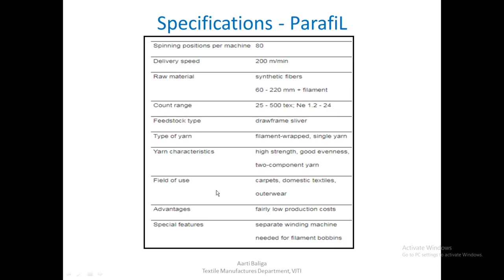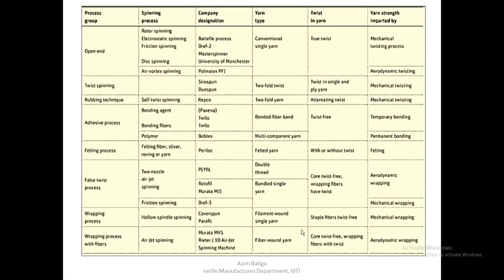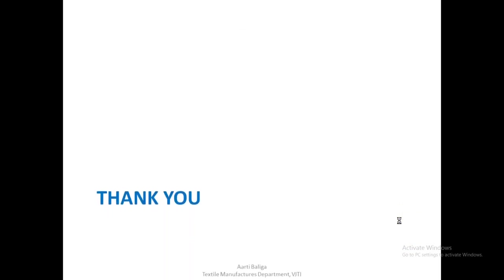We have now completed this row in the summary chart: hollow spindle spinning, commercially known as Parafil, where the filament is wound on a single yarn, staple fibres are twist-free, and twist is inserted by mechanical wrapping. That was the last slide — thank you very much.